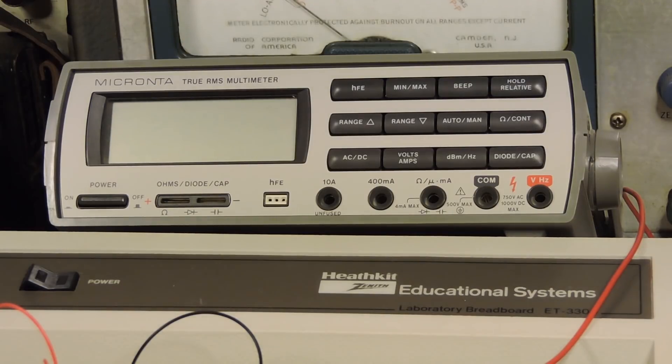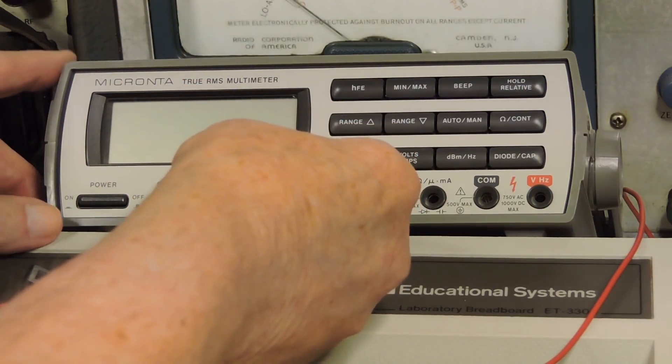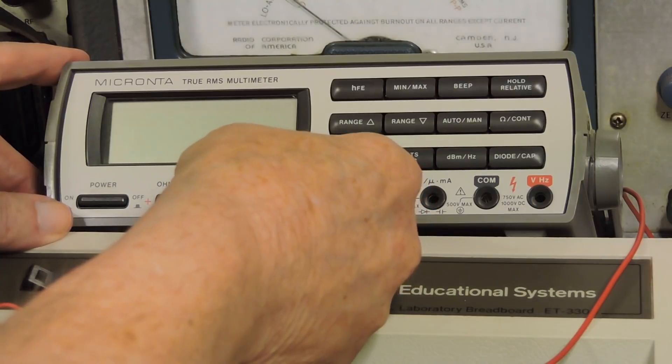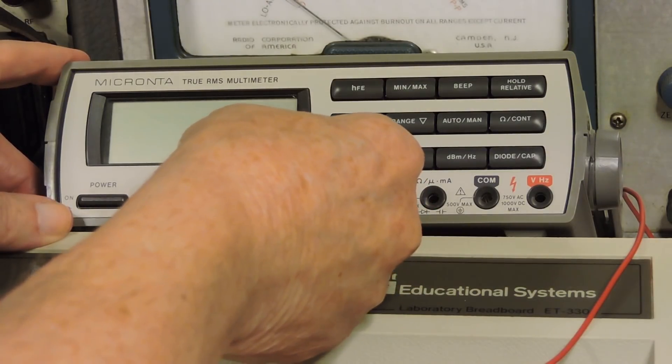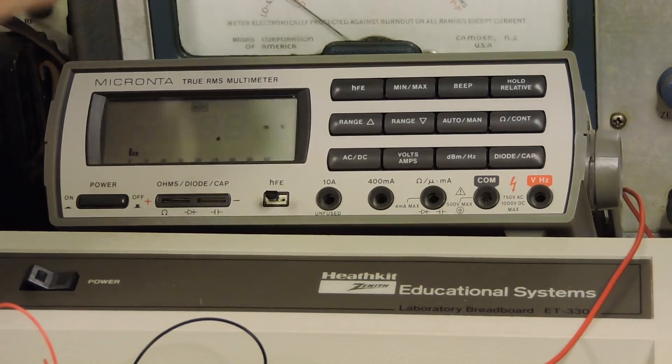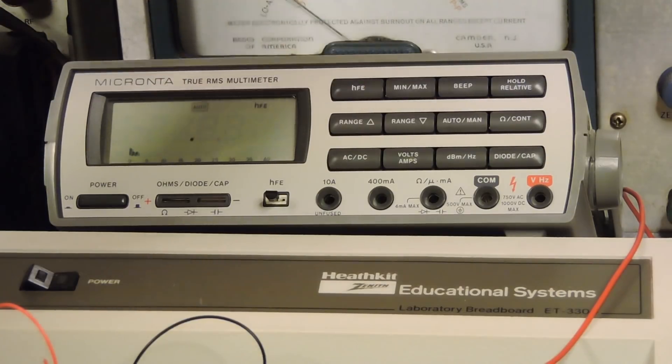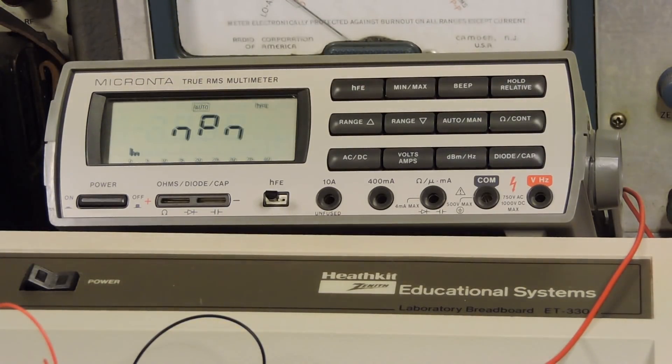Okay, I'm going to measure the beta of some transistors. I'm going to start with the 2N4401. NPN, CBE, about 200.